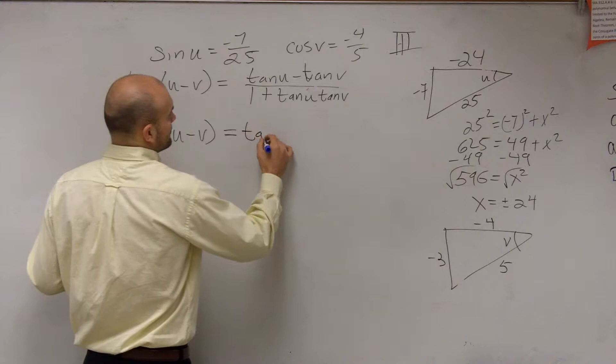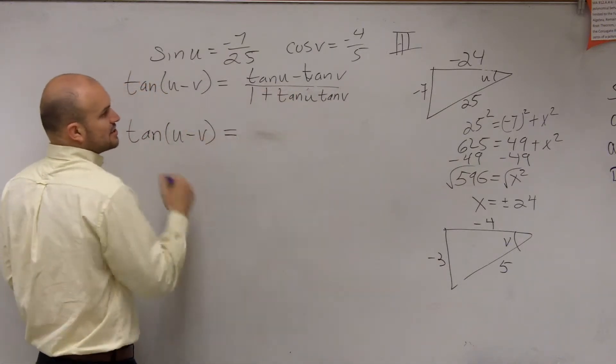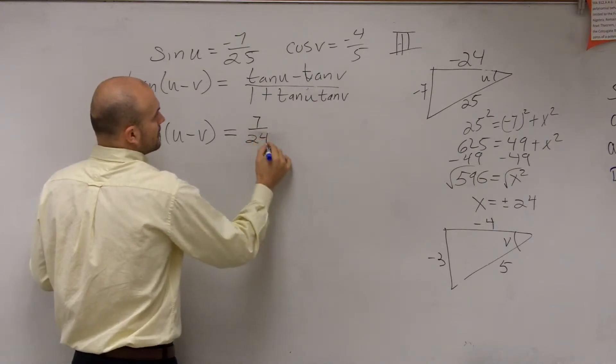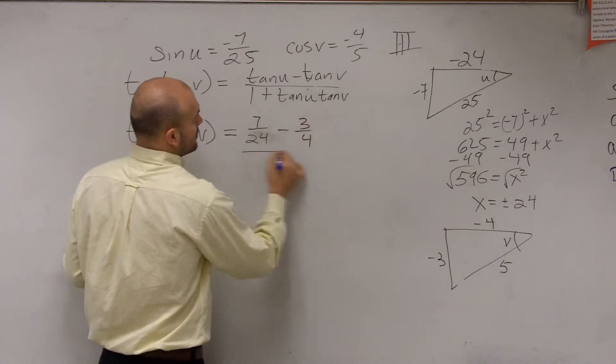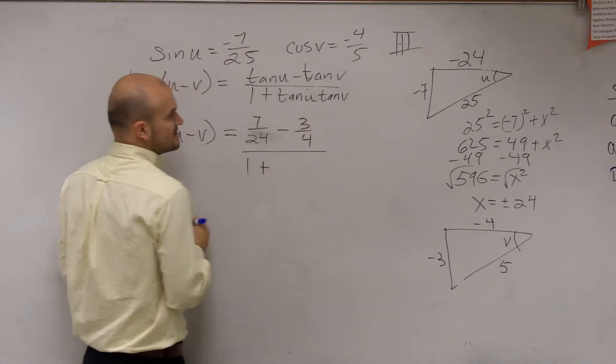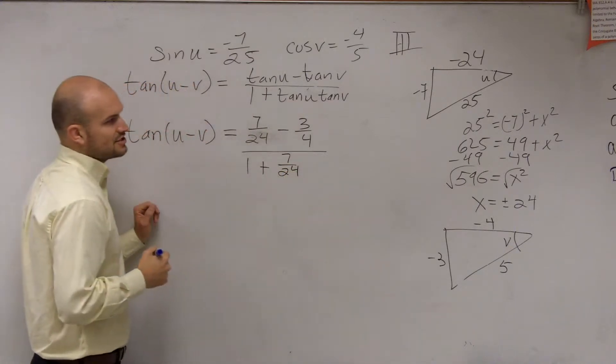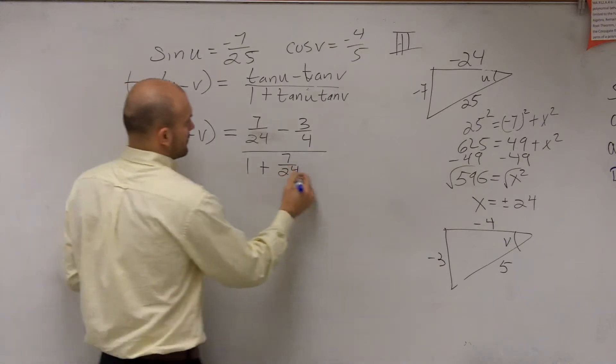So therefore, I can say the tangent of, well, tangent of u now. We know the tangent of u is now 7 over 24 minus the tangent of v, which is 3 over 4, divided by 1 plus tangent of u, which is 7 over 24, times tangent of v, which is 3 over 4.